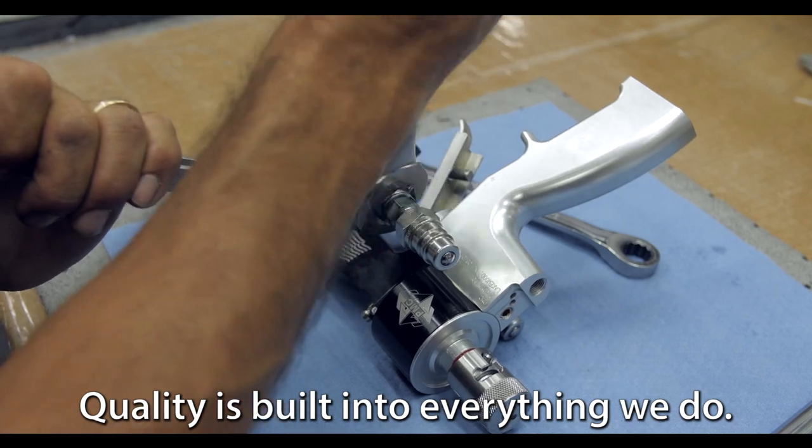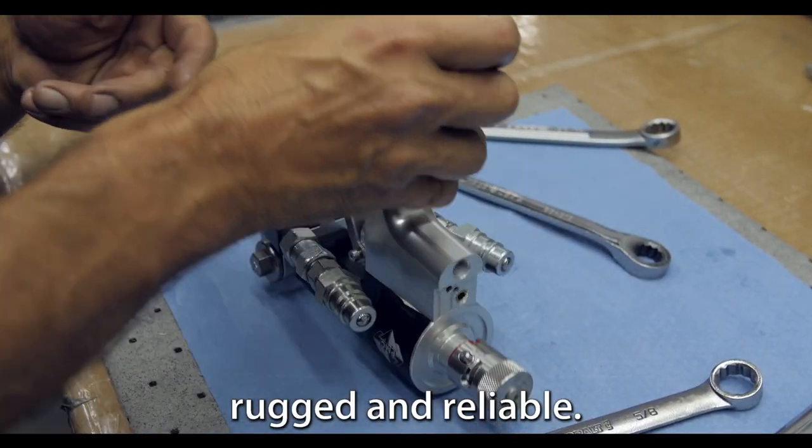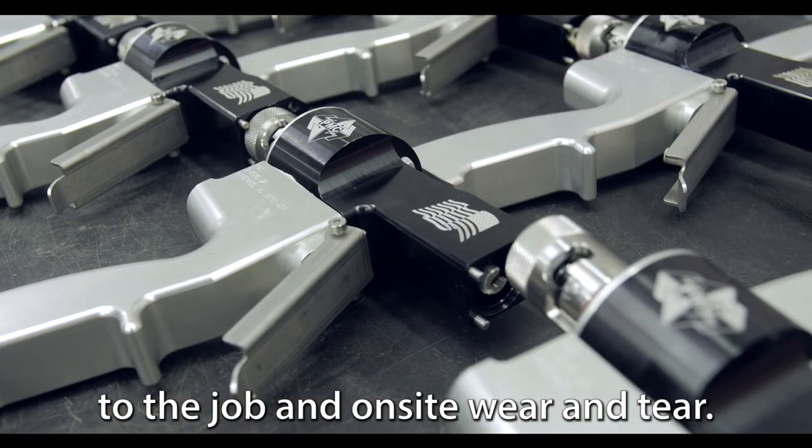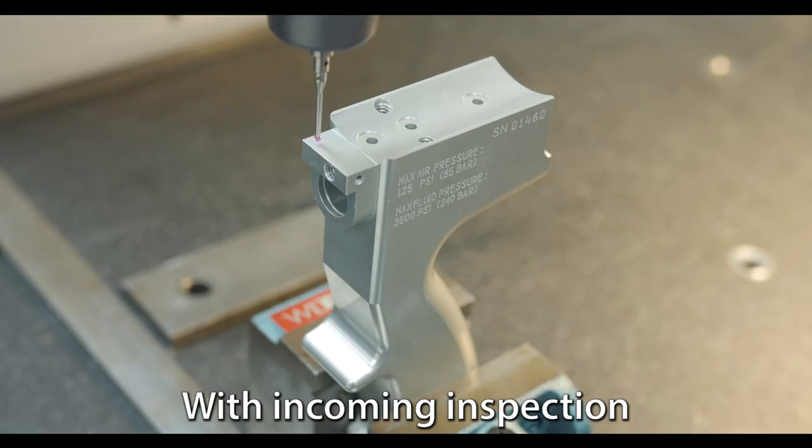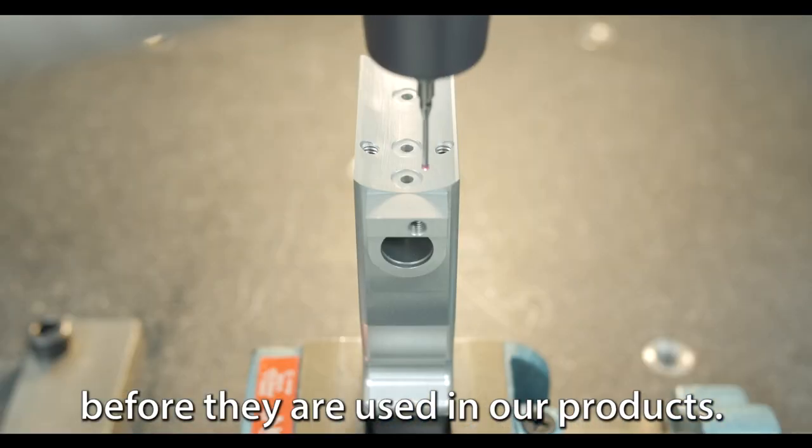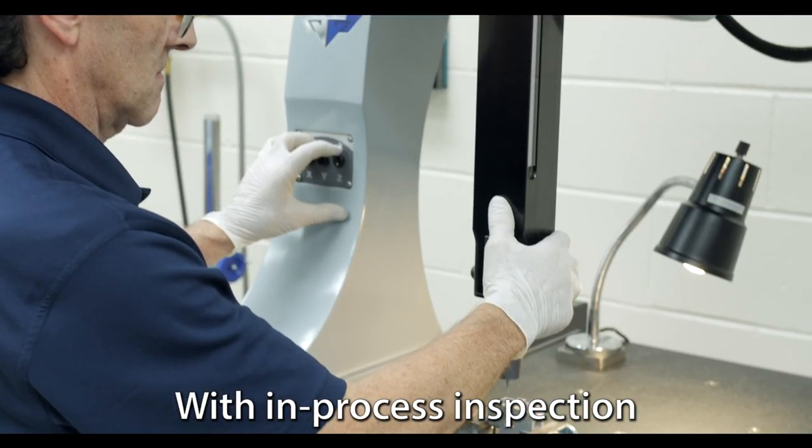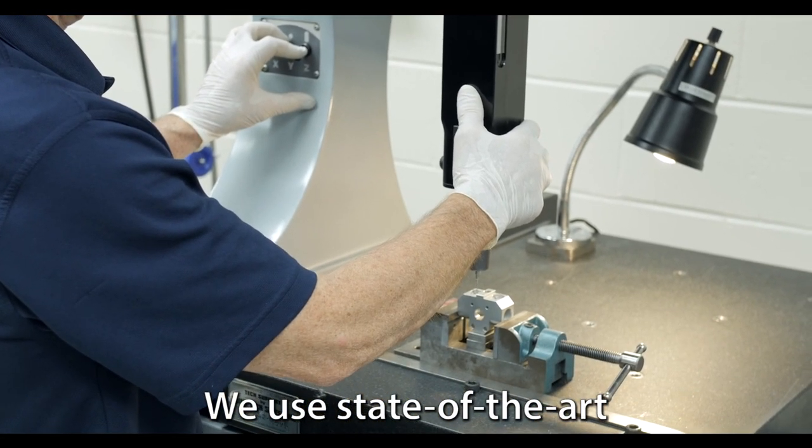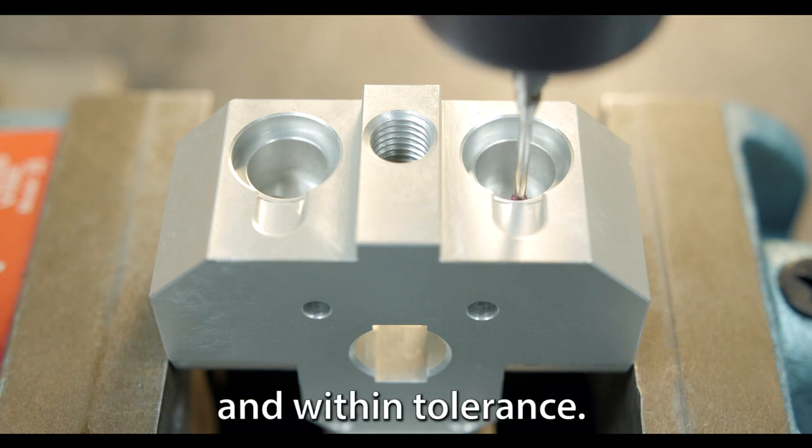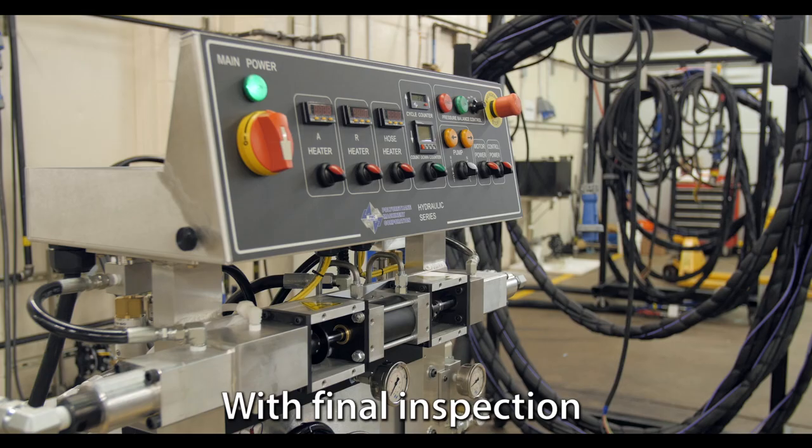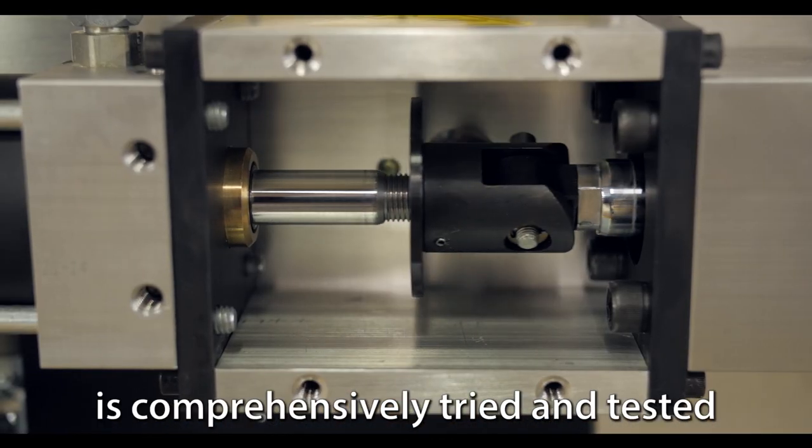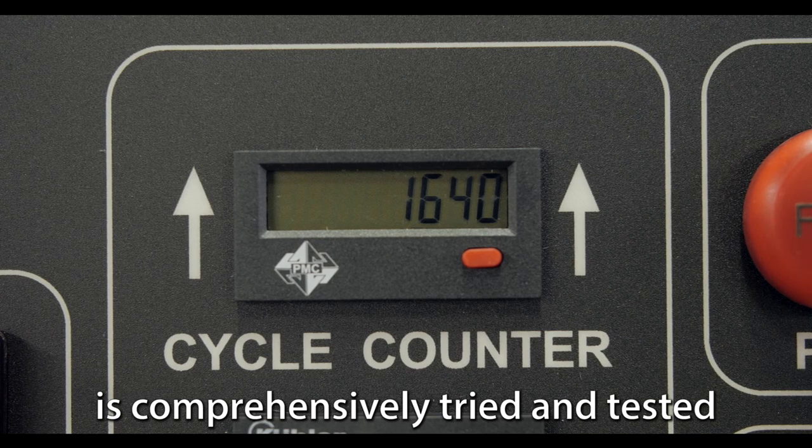Quality is built into everything we do. Our products are made to be rugged and reliable, designed to withstand travel to the job and on-site wear and tear. With incoming inspection, we test the quality of the parts received before they're used in our products. Within process inspection, we use state-of-the-art CMM measuring instruments to make sure every part is precise and within tolerance. And with final inspection, every machine, gun, and pump is comprehensively tried and tested before being shipped.